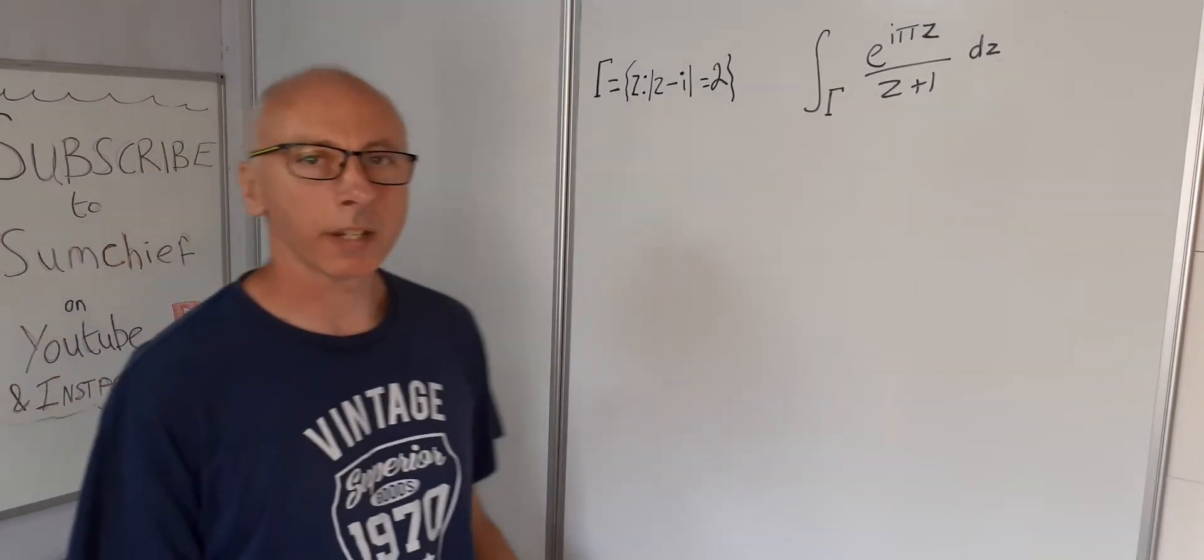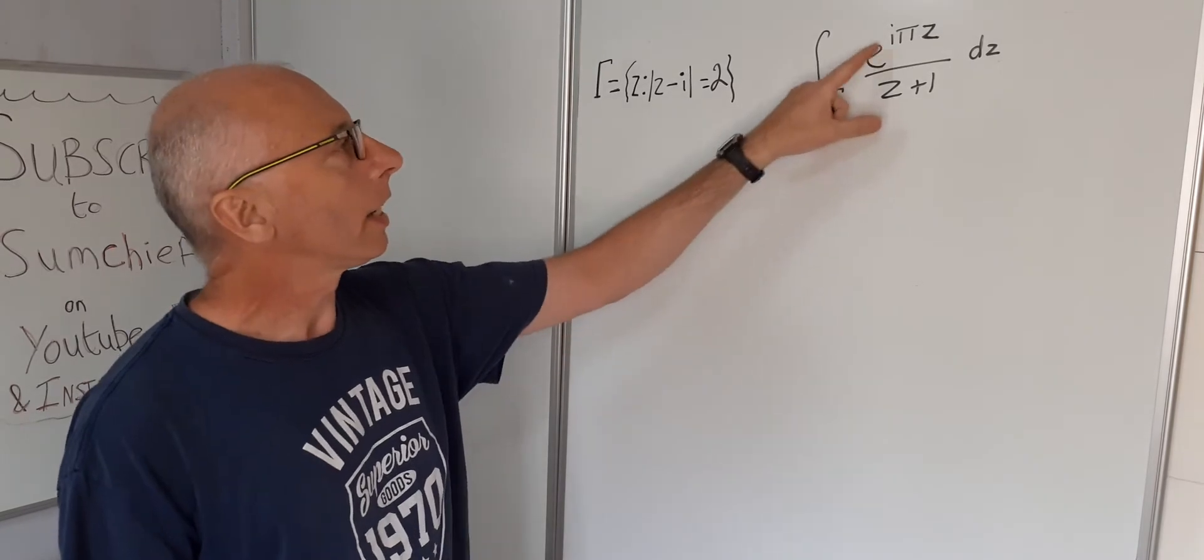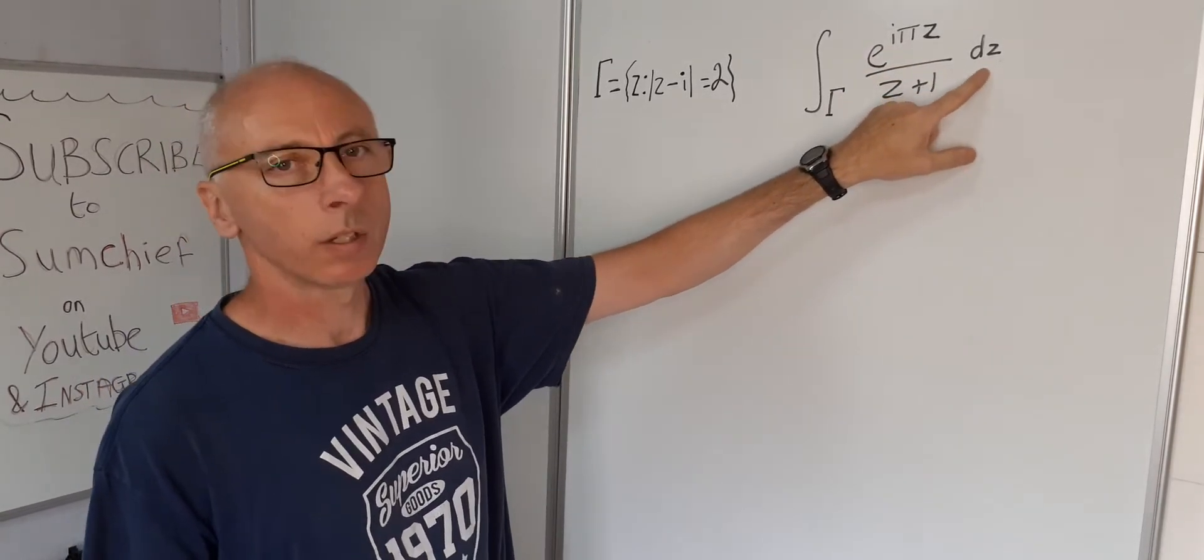Okay, so we're going to look at some complex analysis. We've got an integral here, e to the i pi z divided by z plus i with respect to z.